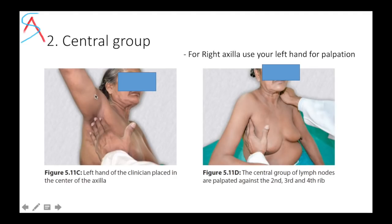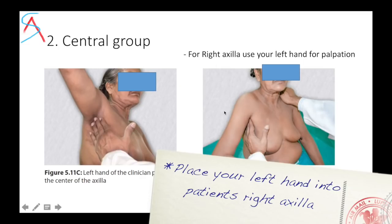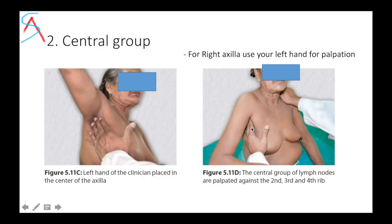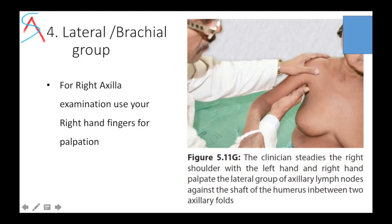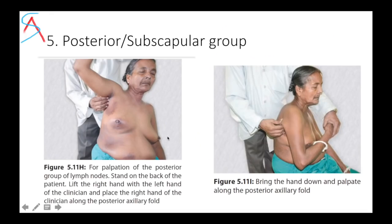Make sure not to poke the patient. Palpate with the pulp of your fingers. For the right axilla use your left hand; for the left axilla use your right hand. For the apical group use the same technique, but push your fingers a little further upward. The lateral group, also known as the brachial group, is palpated against the shaft of humerus between the two axillary folds — for the right axilla use your right hand. For the posterior group, stand on the back of the patient and palpate the lymph node along the posterior axillary fold between thumb and fingers.